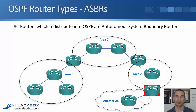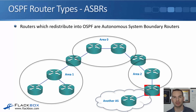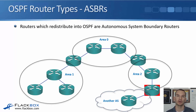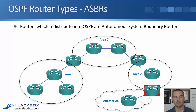Our last type of router is an ASBR, an autonomous system boundary router — whereas ABR is an area border router, ASBR is an autonomous system boundary router. An ASBR means that on that router, it's running OSPF and we're redistributing from another source into OSPF. So maybe we're also running EIGRP or RIP on that router, taking those routes and redistributing them into OSPF so they'll be advertised to OSPF neighbors. Or maybe it's a static route being redistributed into OSPF. An ASBR simply means we're redistributing into OSPF on that router.